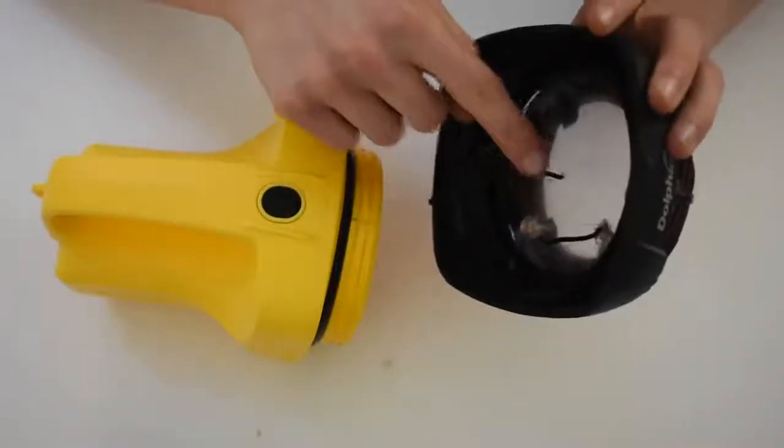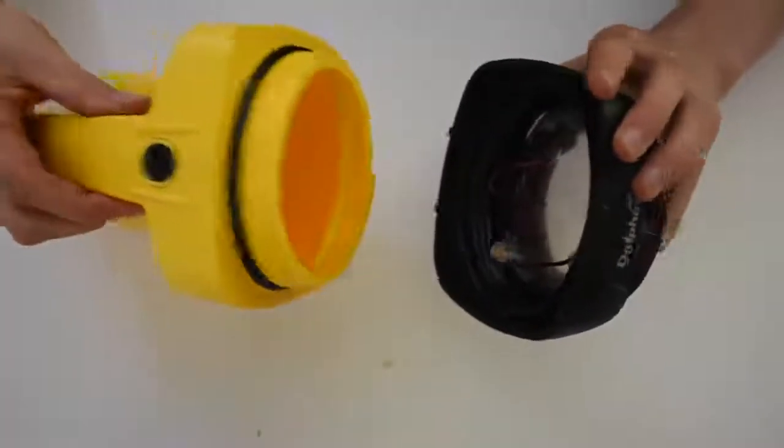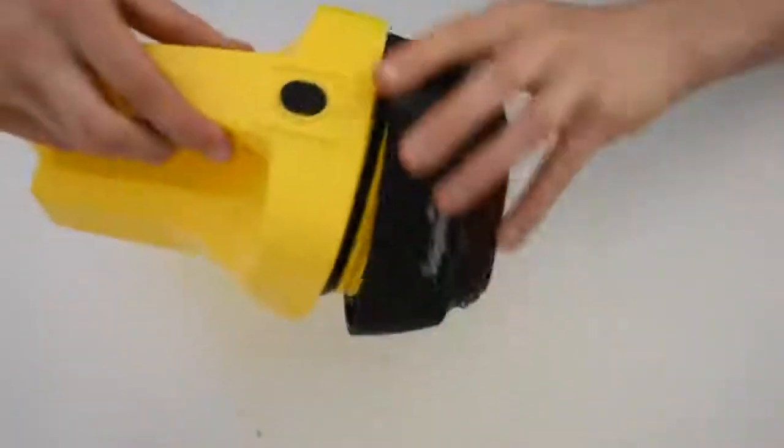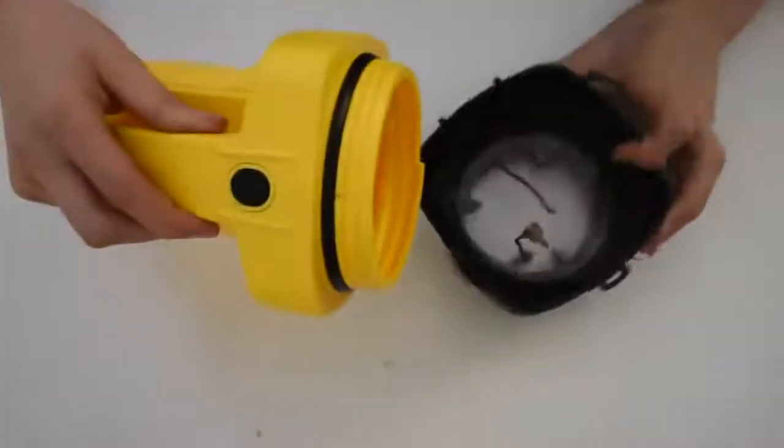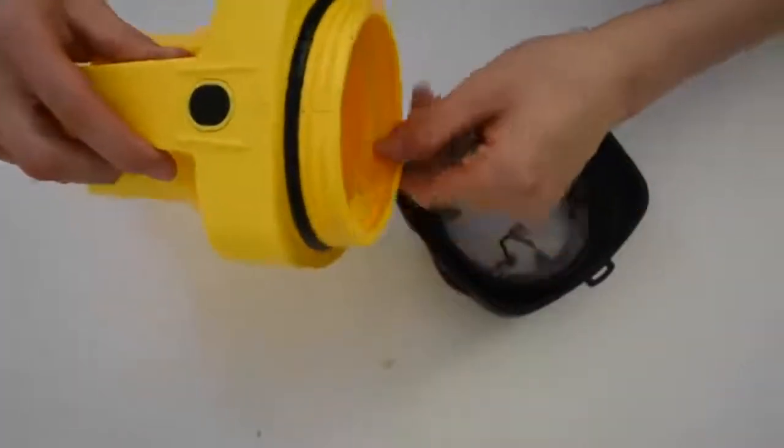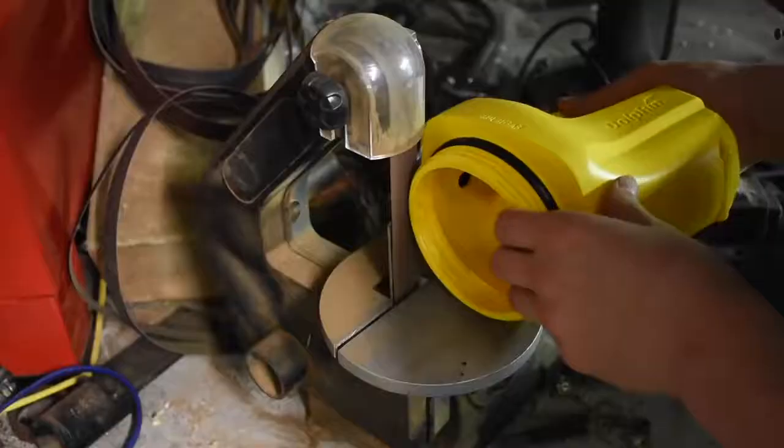I also ran into another problem which is that the cap must twist on. This makes it impossible for me to attach the wires and the nail to the top of the transformer. To get around this problem I decided to sand off the grooves so that the cap could just be pushed on.